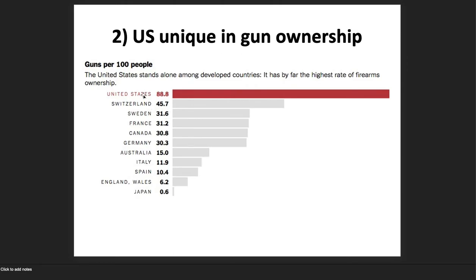There's also a problem with how gun ownership is measured — guns per 100 people. If in one country 100% of the people own one gun each, and in another country 1% of the population owns 100 guns each, both show 100 guns per 100 people. But there's a big difference between one out of every 100 people owning a gun and all people owning a gun. Once you get past your 15th gun, it won't make a huge difference in terms of your ability to defend yourself.